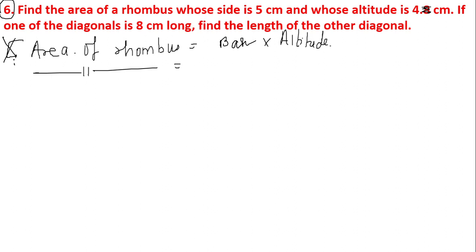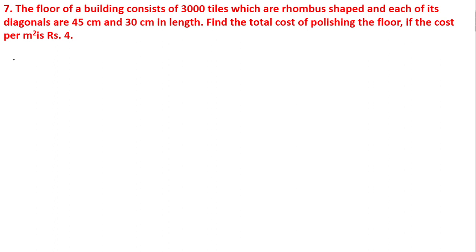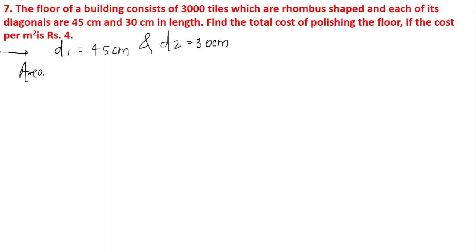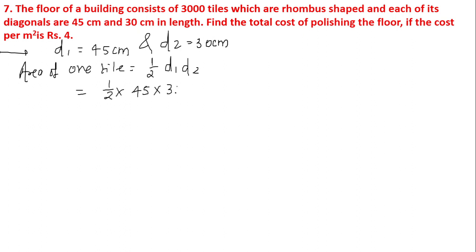The floor of a building consists of 3000 tiles which are rhombus-shaped, and each of its diagonals are 45 centimeters and 30 centimeters in length. Find the total cost of polishing the floor if the cost per meter square is 4 rupees. Here, d1 equals 45 centimeters and d2 equals 30 centimeters. The area of one tile — using the rhombus formula half of d1 into d2 — gives half of 45 into 30, which equals 675 centimeter square.